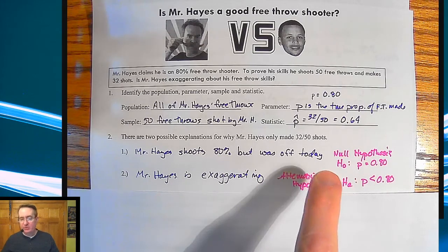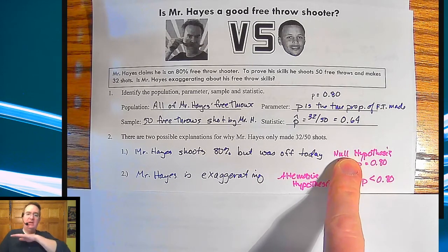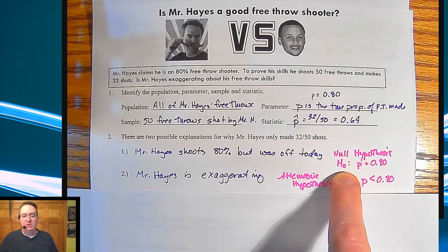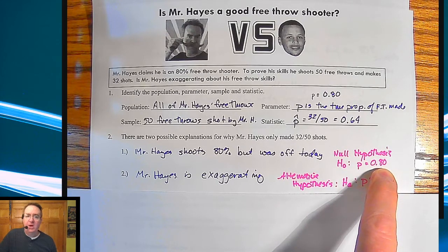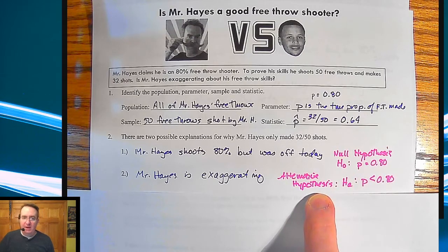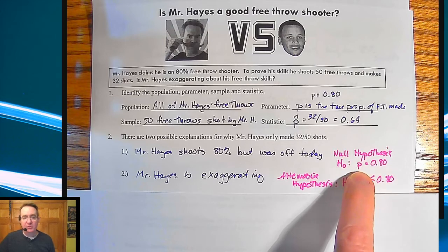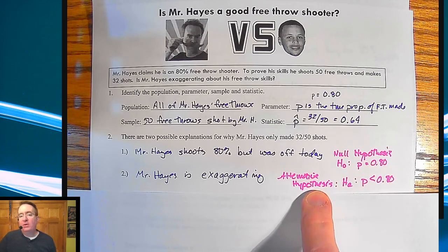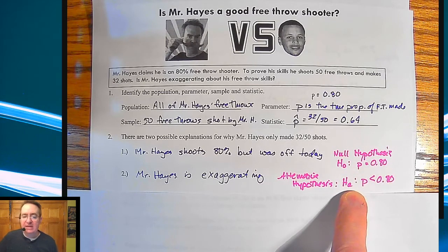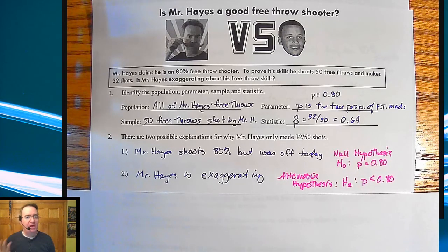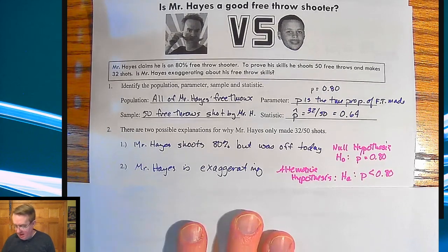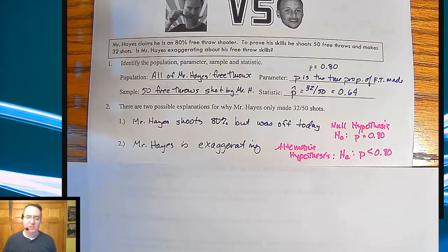We're going to formally state them. The null hypothesis means nothing is changing — it's the status quo. You write H sub zero, and that is set so the true proportion equals 80%. Now if we can prove that to be false, then we have the alternative hypothesis, which says: if the null doesn't hold, what must be true? In this case, the proportion is less than 80%. We're going to formalize all of this more in the next set of videos.